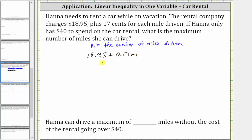Again, this is $18.95 plus 17 cents times the number of miles driven. And since Hannah only has $40 to spend on the car rental, this total cost must be less than or equal to 40.